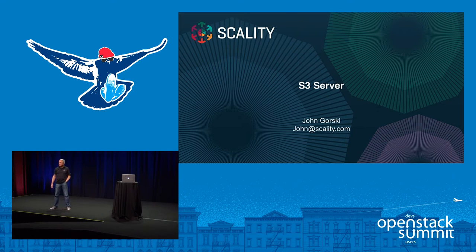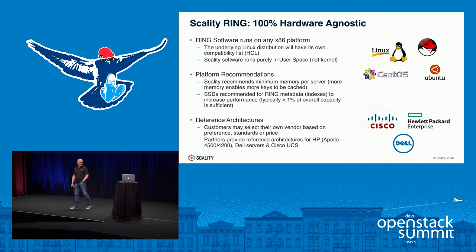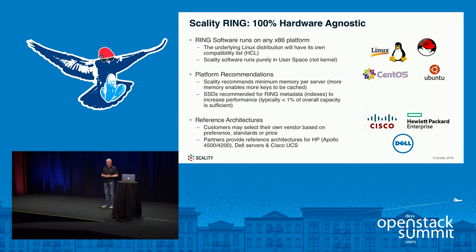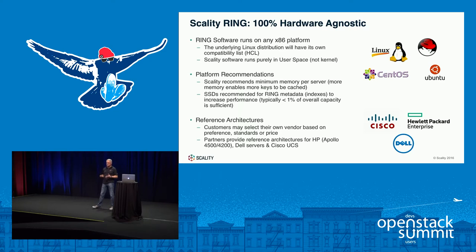My name is John Gorski. I'm a sales engineer with a company called Scality. I'm not sure if you've heard of Scality, so I thought I'd give you a quick background on the company. I'm here to talk about the S3 open source server, a product we just released to the open source community in June, a few months ago. To give you background on what this S3 open source server is and how we got to this point, I want to give you a little history and background on the company itself.